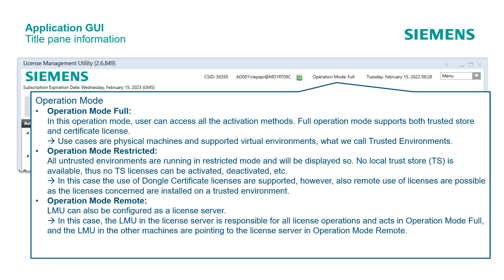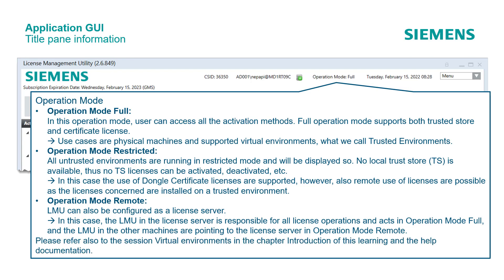LMU can also be configured as a license server. In this case, the LMU in the license server is responsible for all license operations and acts in operation mode Full, while the LMU in the other machines point to the license server in operation mode Remote. For more information, please refer to the session on virtual environments in the chapter introduction of this learning and the help documentation.